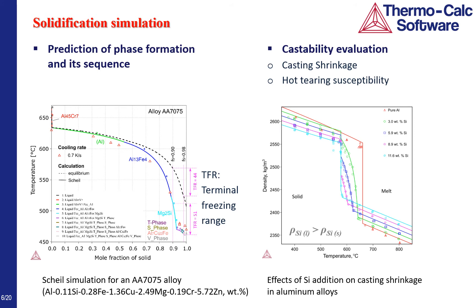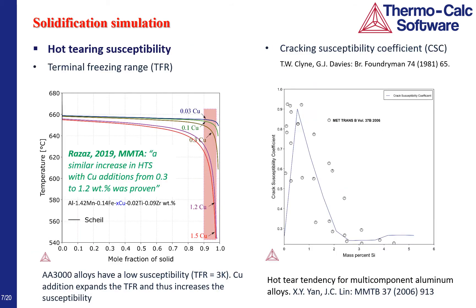Regarding the castability, we can evaluate the casting shrinkage using the descriptions of molar volume and thermal expansivity. As shown here, silicon addition decreases the shrinkage notably because liquid silicon has a higher density than solid silicon. We can also evaluate the hot cracking susceptibility. Based on the concept of terminal freezing range, the 7075 alloy has a quite large terminal freezing range of more than 40 Kelvin and thus is highly susceptible to hot cracking. By comparison, the 3000 series has a small terminal freezing range of only about 3 Kelvin.